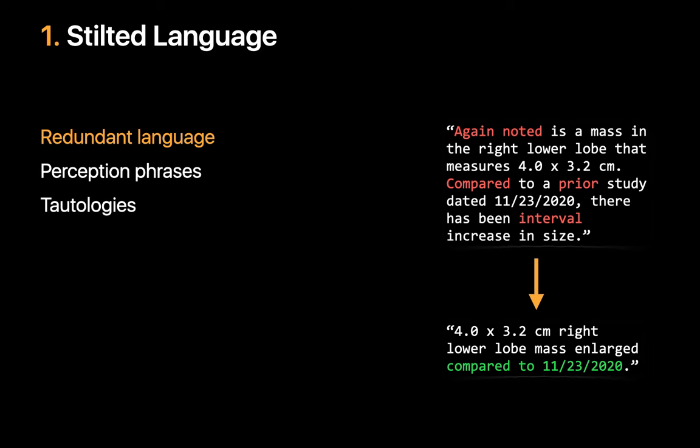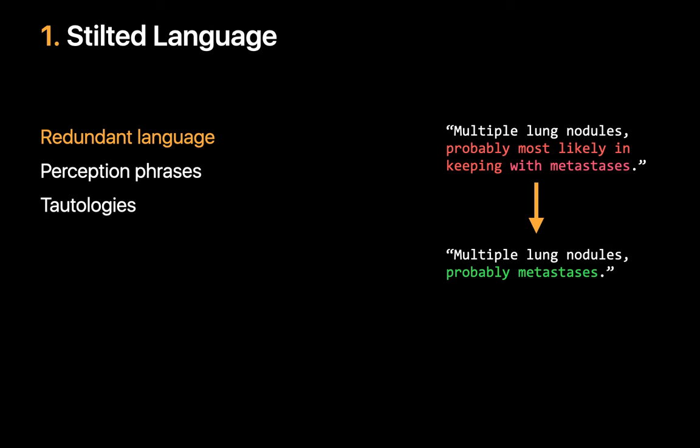A radiologist sees a finding and dictates that, then compares that finding to the way it appeared on a prior study and dictates that, and so on. In an ideal work environment, a radiologist would mentally cache everything they saw and then dictate a succinct statement at the end. However, in the real world, radiologists get interrupted frequently by things like a phone call or consultation, and it's sometimes easy to forget where you left off. Another contributor to redundant language is hedging — for example, a passage containing three hedges in a row: probably, most likely, and in keeping with. A more succinct statement such as 'multiple lung nodules, probably metastases' would express the same thing with no effect on the degree of certainty conveyed and be much easier to read.